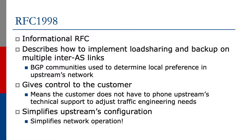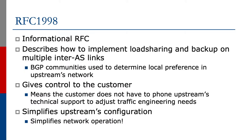We're going to talk about RFC 1998, which is a traffic engineering RFC. It's about using communities to set local preference on a remote autonomous system. The way it works is you use BGP communities to determine what the remote AS is going to set the local preference as on each of these links.